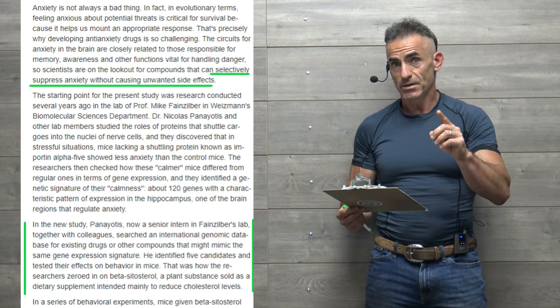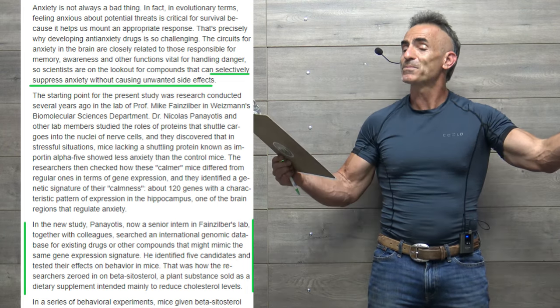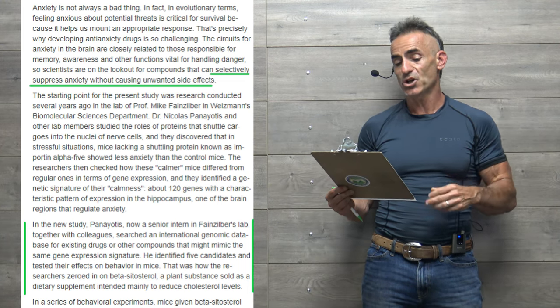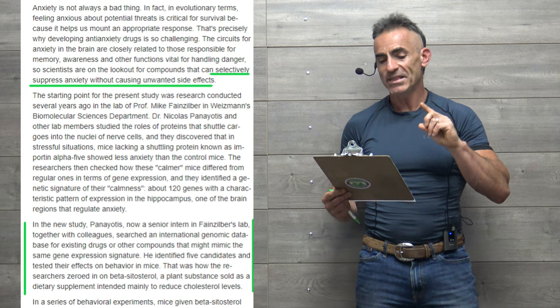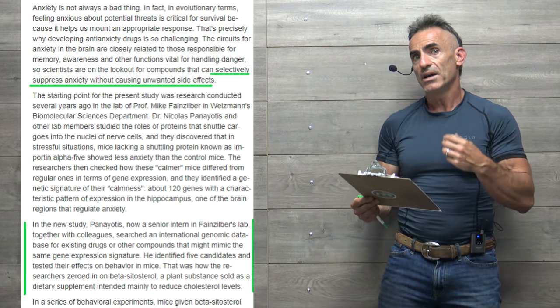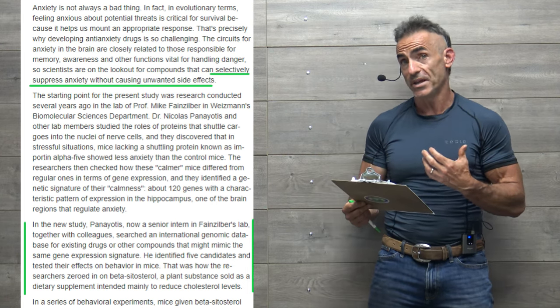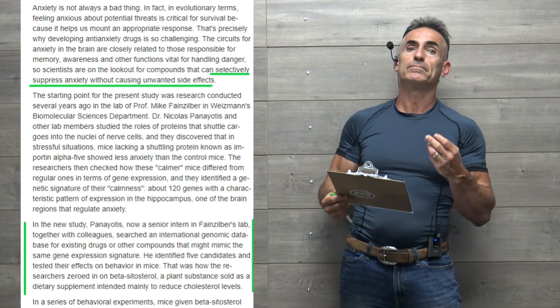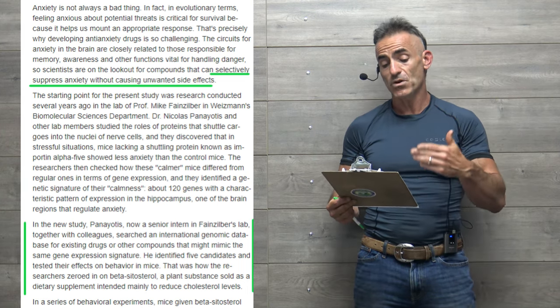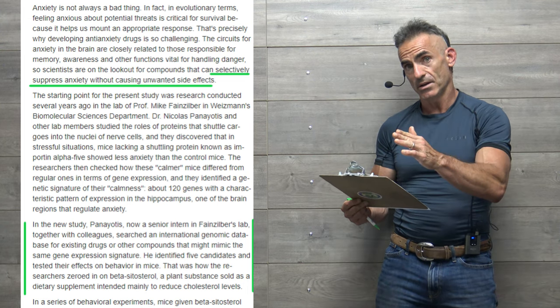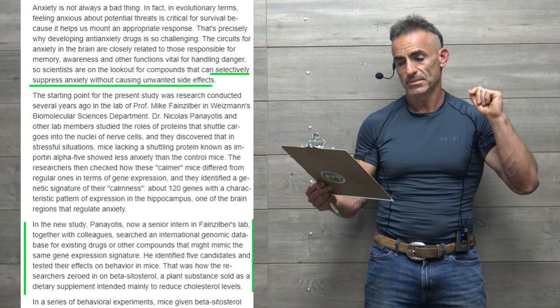They looked at a plethora of phytosterols and keep in mind they realized a lot of the studies in reference to phytosterols had mixed results until they focused just on the one. In this new study, researchers, together with colleagues, searched an international genomic database for existing drugs or other compounds that mimic the same gene expression signature, looking for something to relieve anxiety without having any of those unwanted effects. They identified five candidates and tested their effects on behavior in mice. That's how the researchers zeroed in on beta-sitosterol, a plant substance sold as a dietary supplement intended mainly to reduce cholesterol.